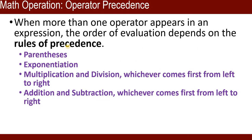Operator precedence. When more than one operator appears in an expression, the order of evaluation depends on the rules of precedence. First, we solve parentheses. Second, we solve exponentials. Third, multiplication and division have the same hierarchy — whichever comes first from the left side, we solve that one first. Then addition and subtraction have the same hierarchy, and we solve whichever comes first from the left side.